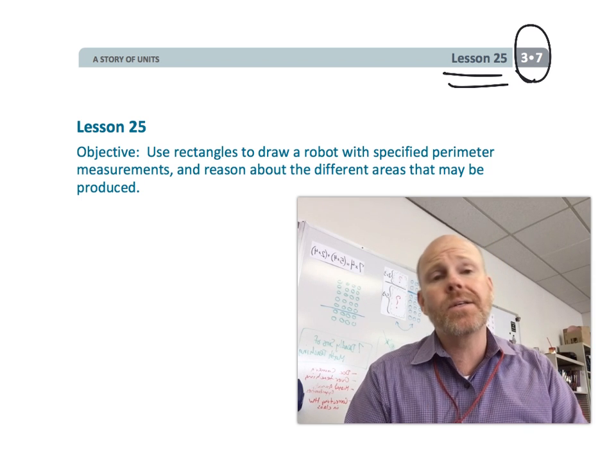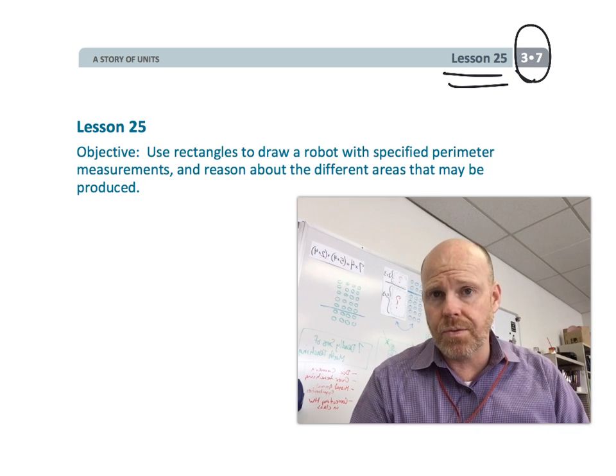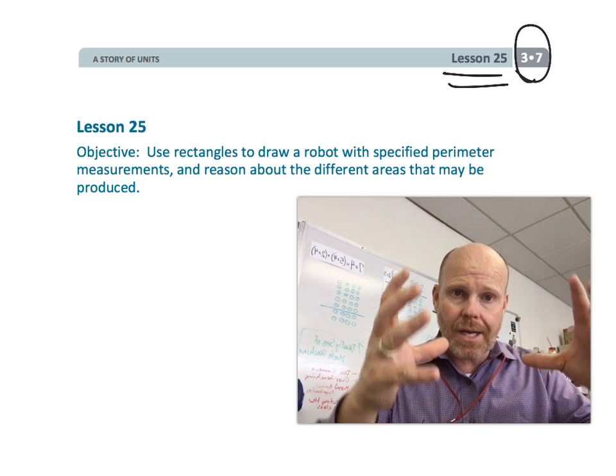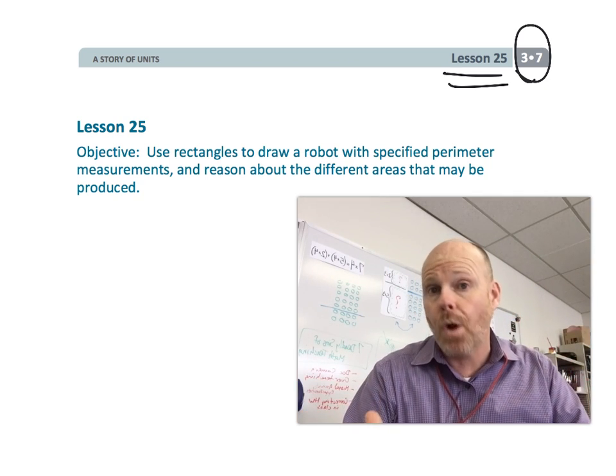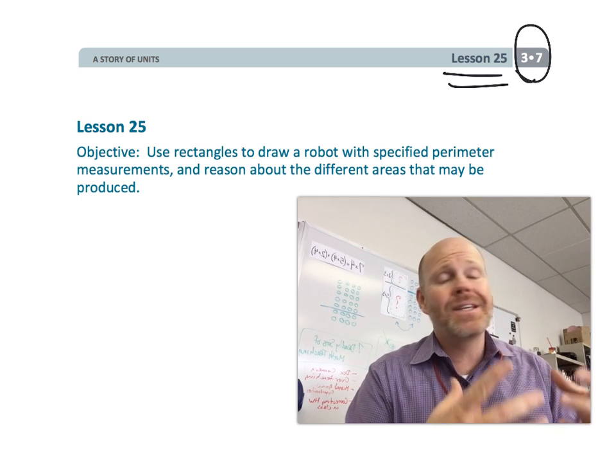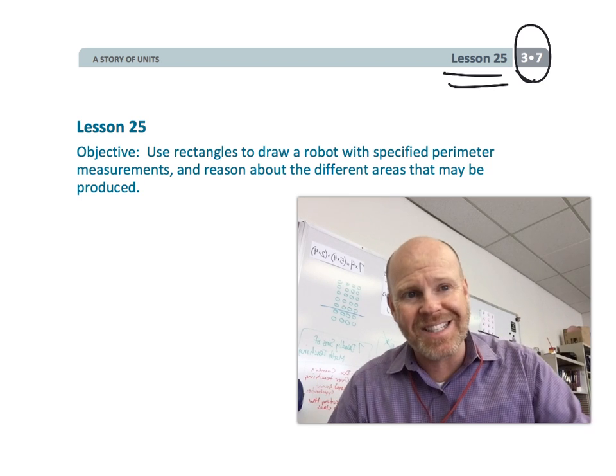The homework is still going to continue asking questions about rectangles and the perimeter of those rectangles. This time though, students are going to be given a nice picture of a robot, and they're going to find the perimeters of all those different rectangles. This is not the same robot as the one they worked on in class. So let's get started.